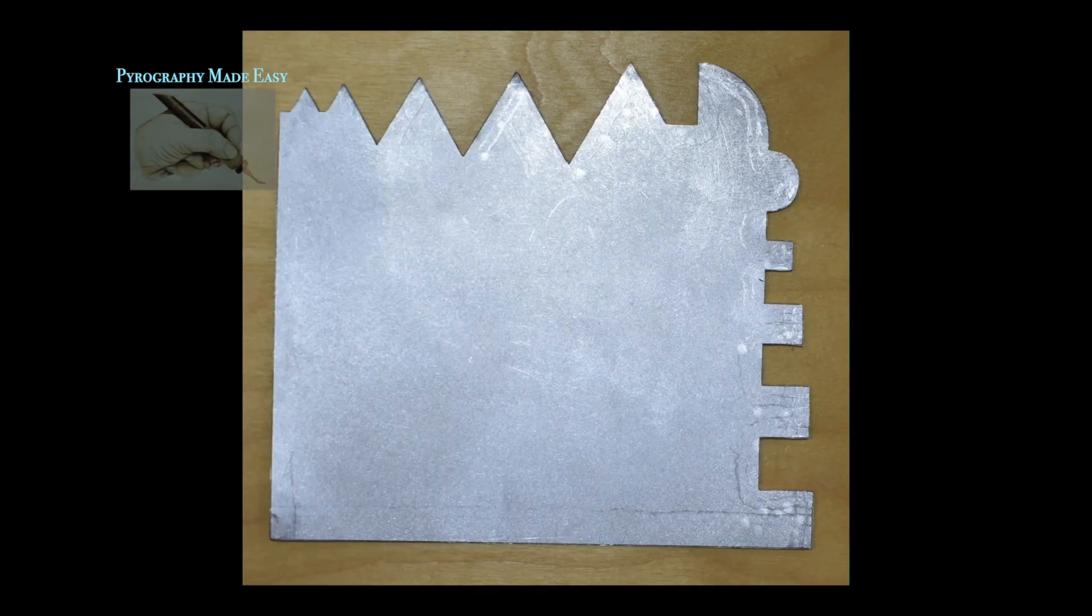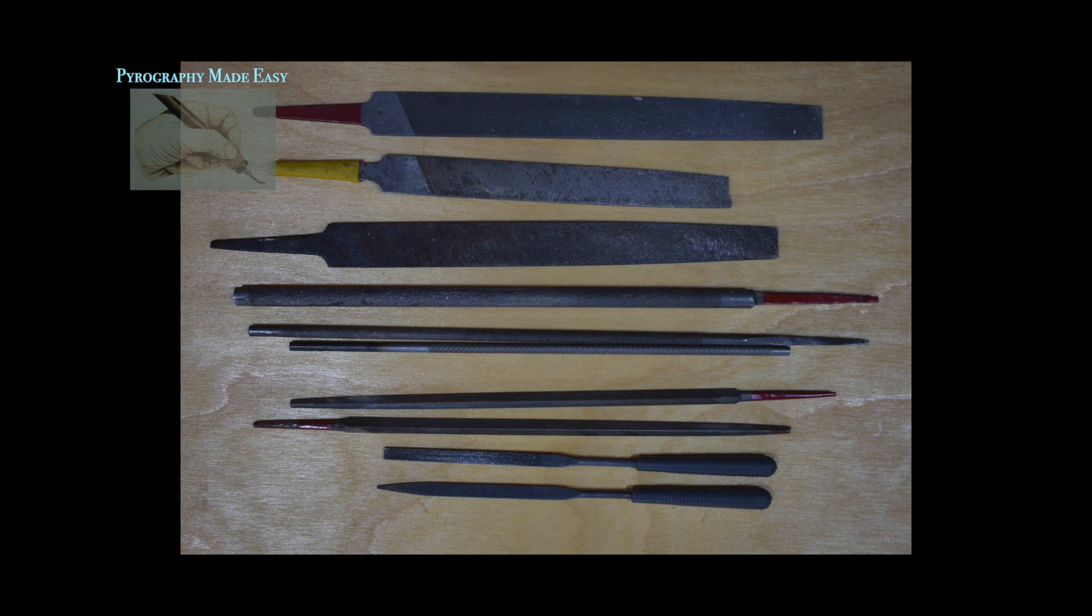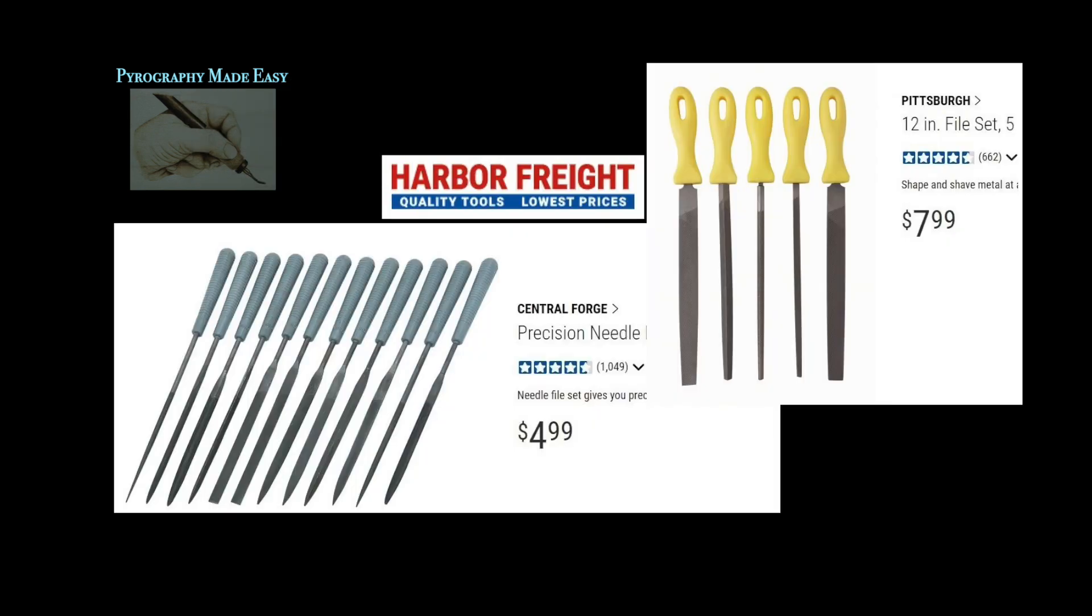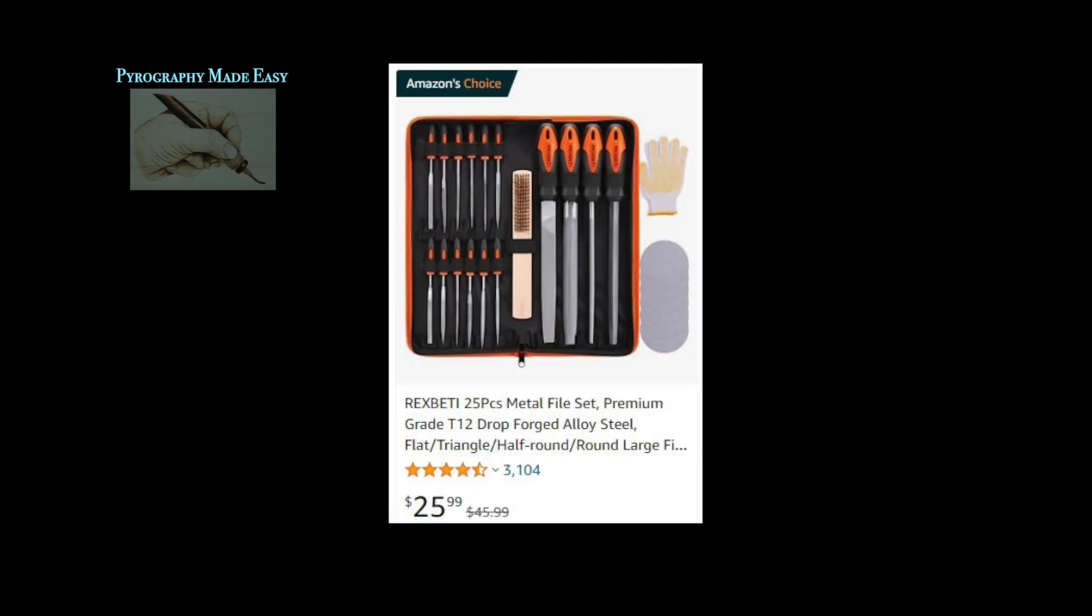Here is how the shield looked after Todd was done filing and sanding it. The files used are inexpensive fine grit metal smoothing files. You can find sets of them at Harbor Freight, home improvement stores like Home Depot carry sets. There are numerous sets online including this set that comes with a case found on Amazon. I'll have links to the products in the description below.